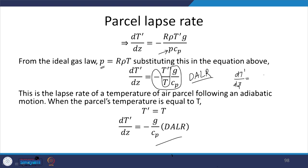More precisely, dT prime by dz equals T prime over T times gamma D. This means the rate at which temperature changes inside the air parcel depends on the dry adiabatic lapse rate but also on the ratio of temperatures between the air parcel and the surroundings. If the atmosphere is stable with respect to the parcel — meaning convective movements are not allowed — then the temperature inside the air parcel equals the temperature outside, and the rate at which temperature changes is simply the dry adiabatic lapse rate multiplied by the ratio of the temperatures.